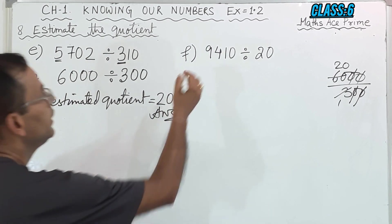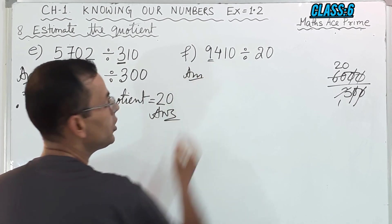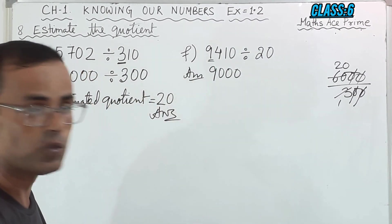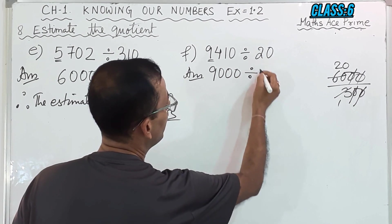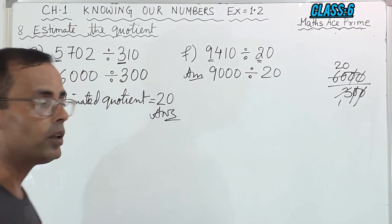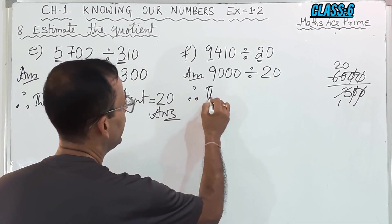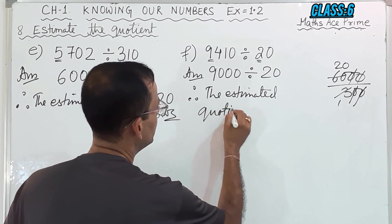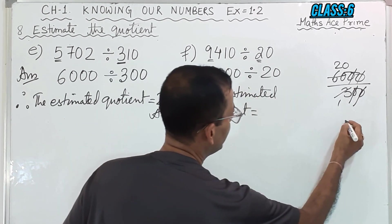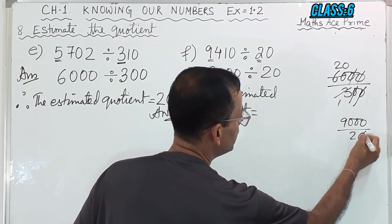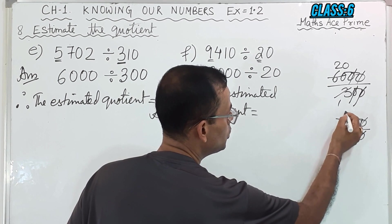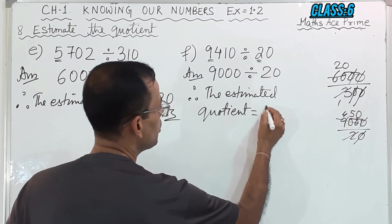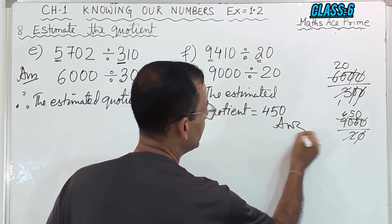Then next one, number F: I will round off here. The rest digits become 0, and 9 will remain 9 only because the next digit is 4. Divided by — round off: it will be 20 only. Therefore the estimated quotient: 9,000 divided by 20. Cancel zeros: 2, 1's are 2; 2, 4's are 8 — 1 extra, so 10; 2, 5's are 10. So you get 450. And this is the answer.